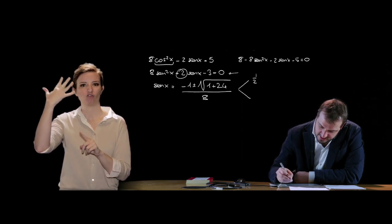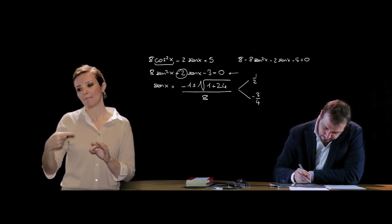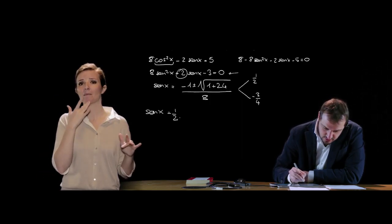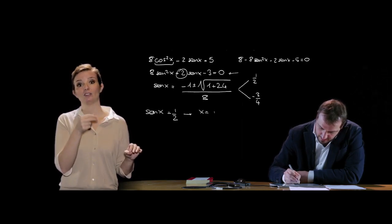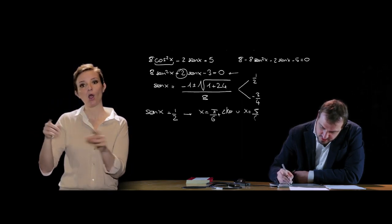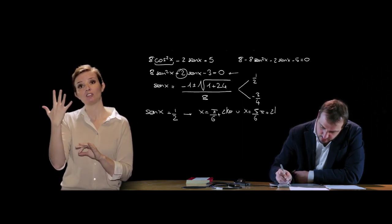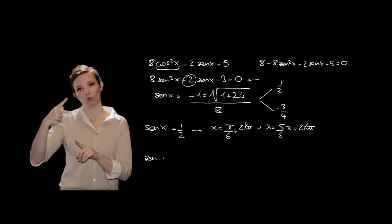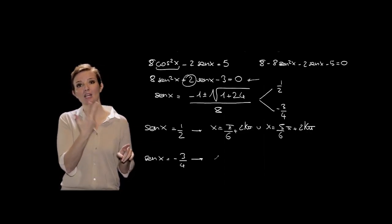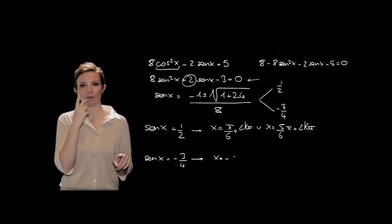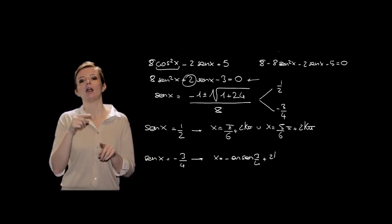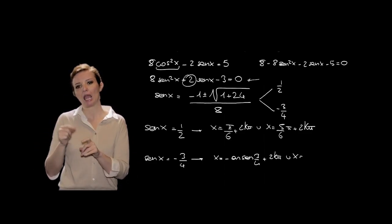Le soluzioni sono 1/2 oppure −3/4. Si tratta allora di risolvere due equazioni elementari in seno: sen x = 1/2, che dà x = π/6 + 2kπ oppure x = 5π/6 + 2kπ. L'altra equazione elementare, sen x = −3/4, richiede di introdurre la funzione inversa del seno, l'arco seno.